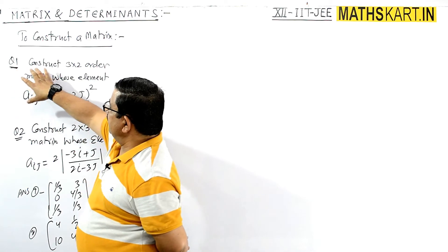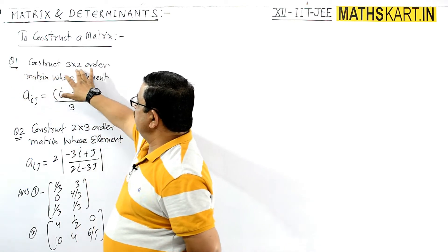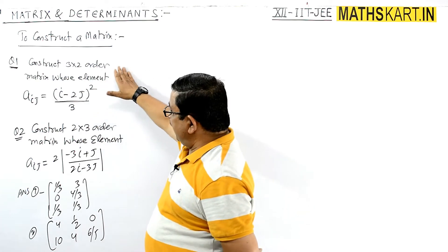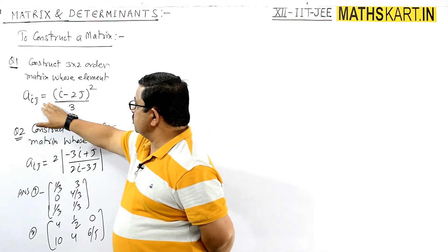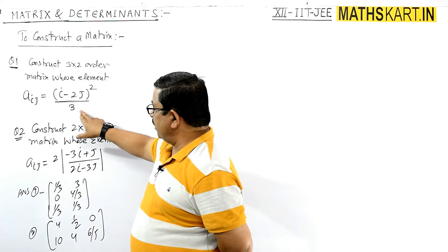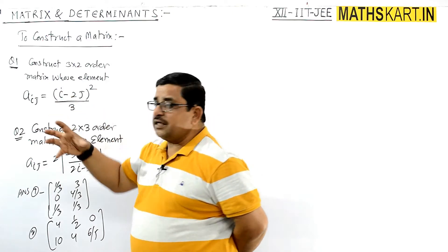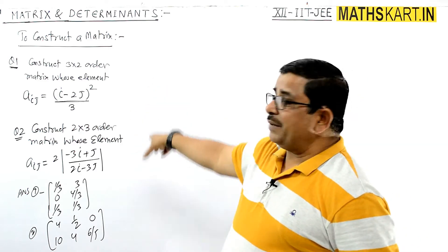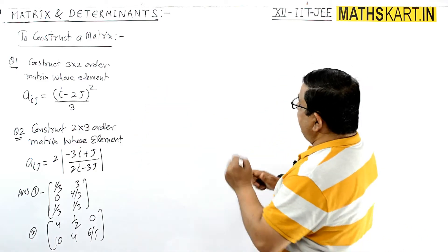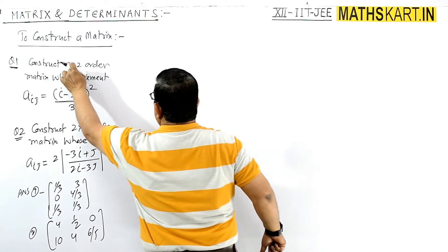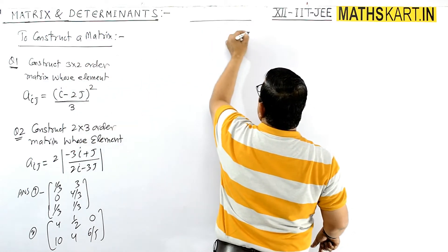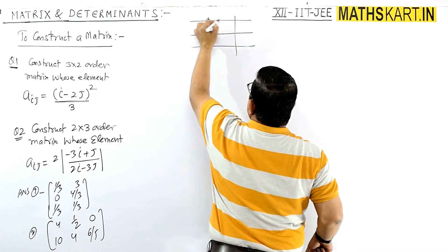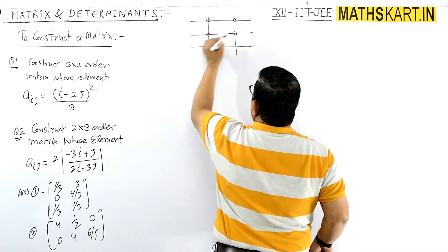Question 1: Construct the 3 by 2 order matrix whose element is given by aij equals (i minus 2j) whole square by 3. The general element is given and we know this is a 3 by 2 order matrix. So 3 rows and 2 columns — we know there are that many elements.